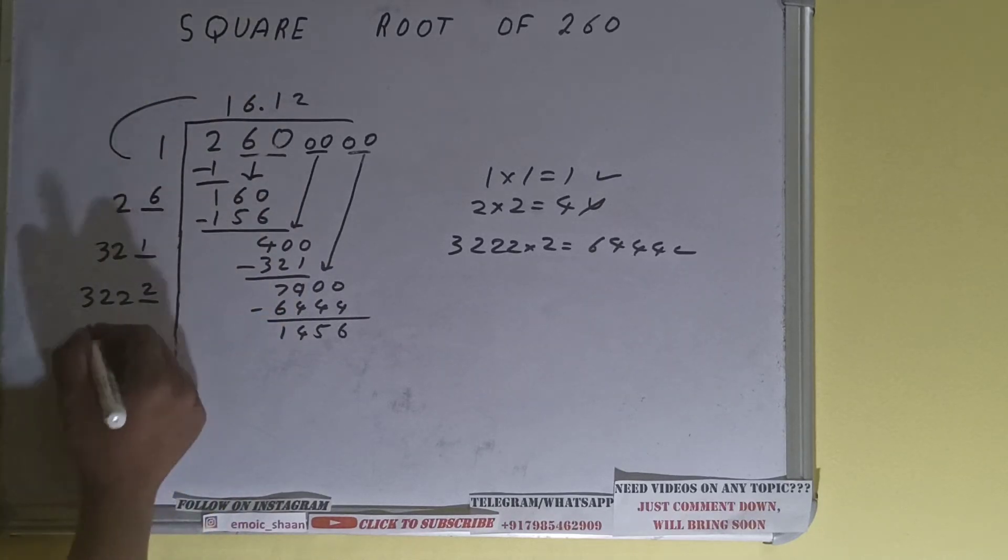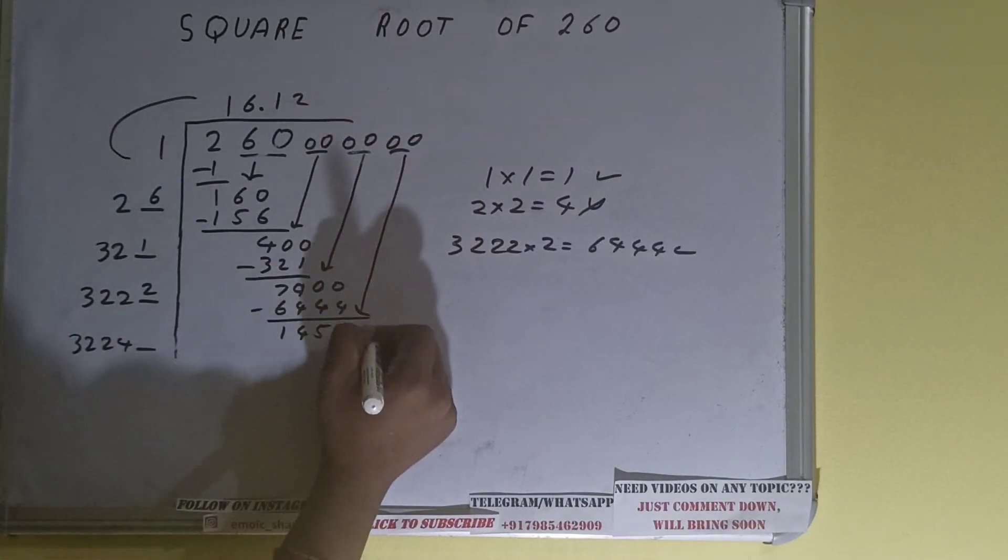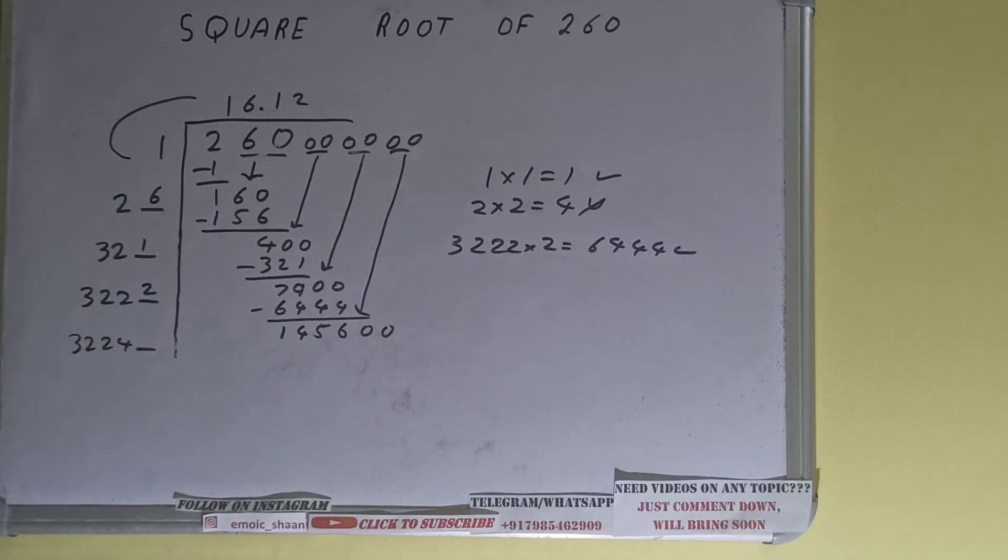3222 plus 2 will be 3224 and one digit extra over here. Bring one more pair of zeros down and number will become 145600.